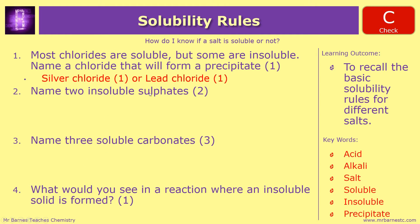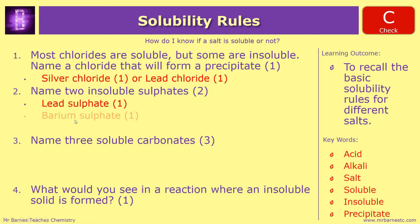Name two insoluble sulfates - there are three you could have put, so any two of these will do. The first one being lead sulfate, so that's a good one to remember - lead in both these cases is insoluble. Barium sulfate and calcium sulfate are your other two.